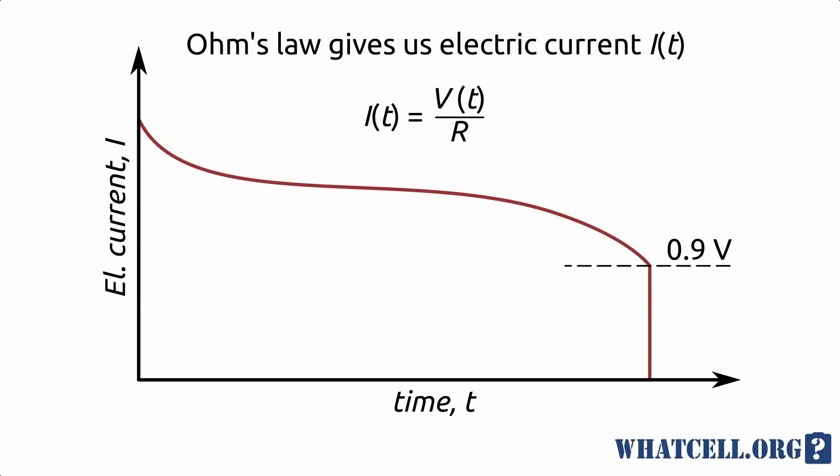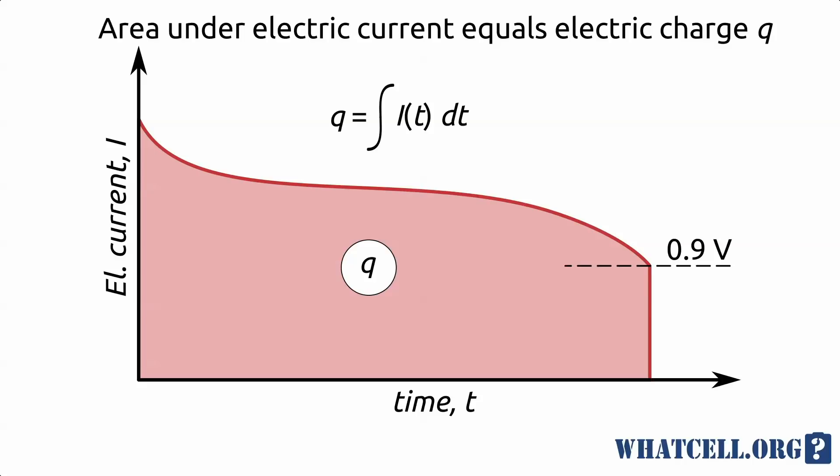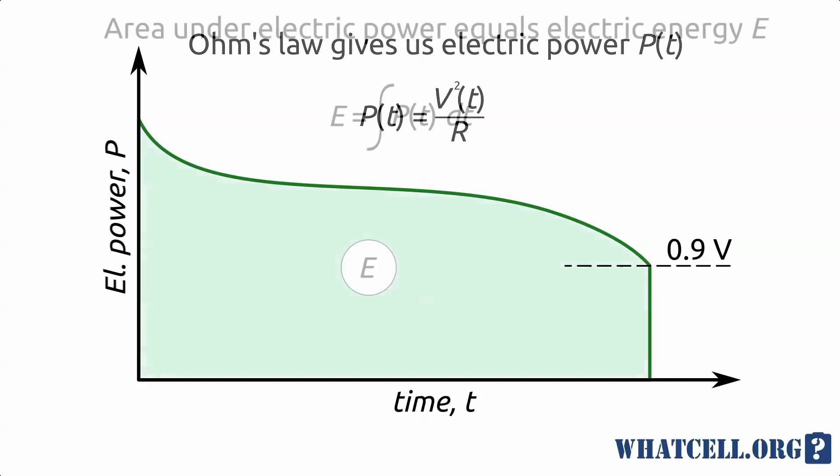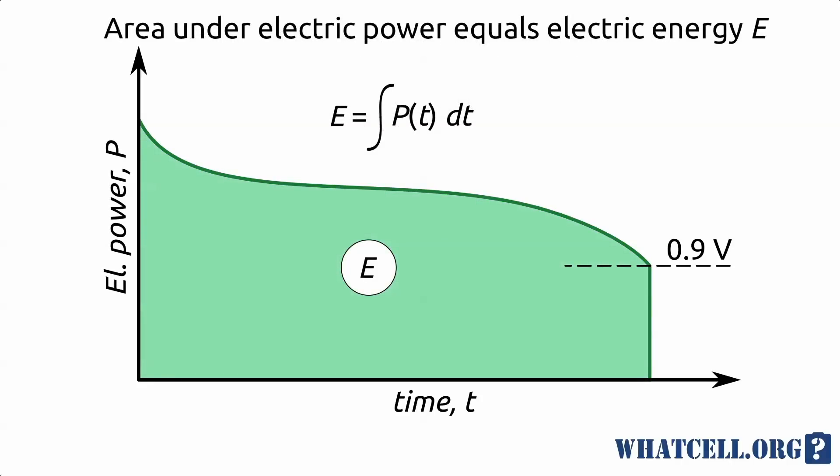Ohm's law gives us electric current in time and the area under the graph is electric charge. Ohm's law also gives us electric power and the area under this graph is electric energy.